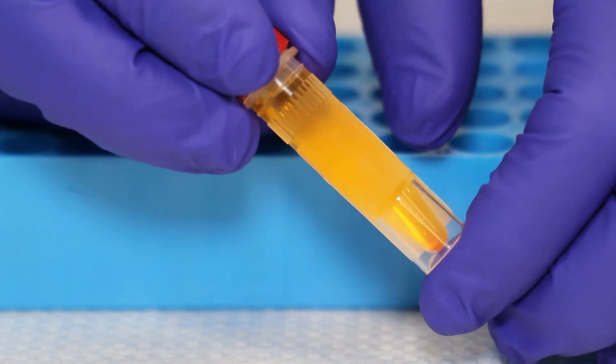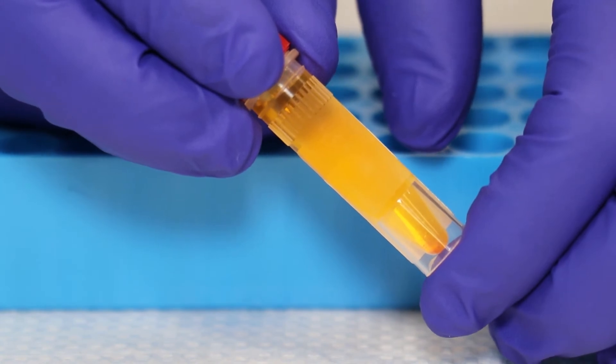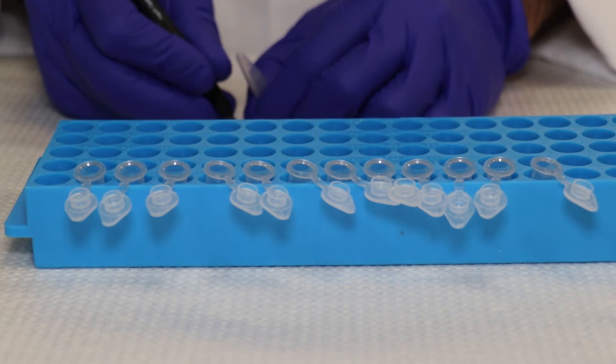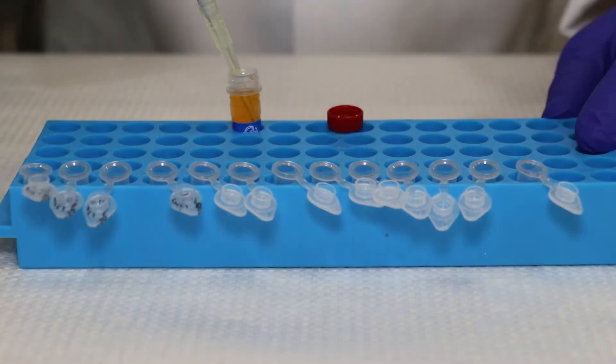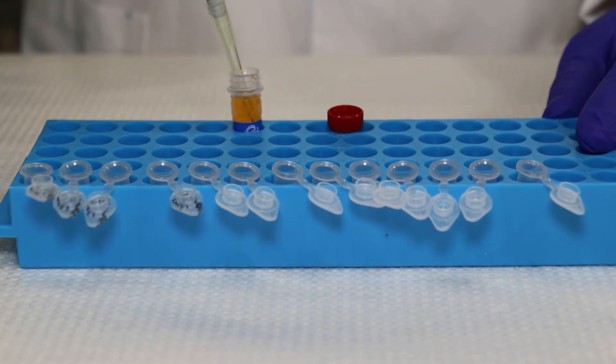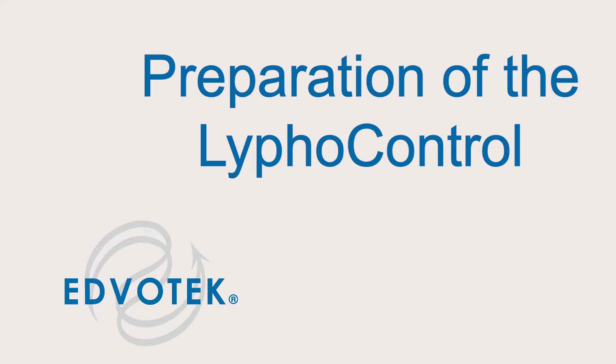The solution should be light orange and clear of any solid pieces. Step 4: label 13 microcentrifuge tubes PTC primer. Aliquot 90 microliters of the rehydrated primer into the 13 tubes. Place the tubes on ice until they are needed. If you would like to prepare the primers ahead of time, they can be aliquoted and frozen until needed.